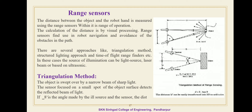The calculation of distance is by visual processing. Range sensors find use in robot navigation and avoidance of obstacles in the robot path. There are different methods or approaches used in range sensors: the first is the triangulation method, the second is the structured lighting approach, and another one is the time-of-flight range finder. The sources of illumination can be a light source or laser beam, and some beams are based on ultrasonic.